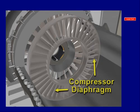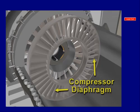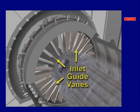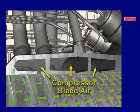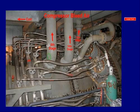Dovetail blade roots attach the blades to the rotor shaft. The compressor diaphragm has stationary airfoil-shaped vanes mounted in semicircular rings set into the compressor housing. Through the use of variable inlet guide vanes and compressor stage bleed vanes, the compressor bleed air system controls the amount of air flowing in the compressor section to prevent pressure surging or blade stalling.